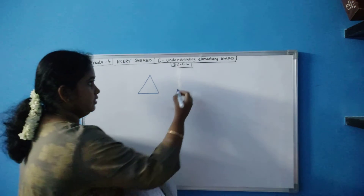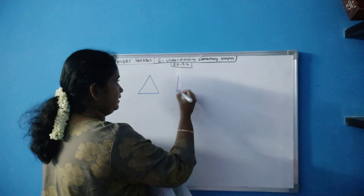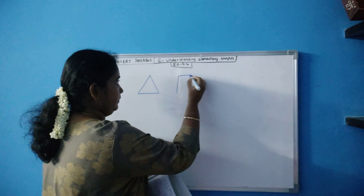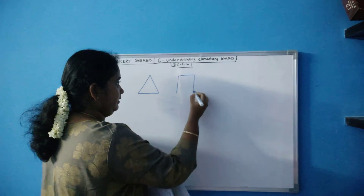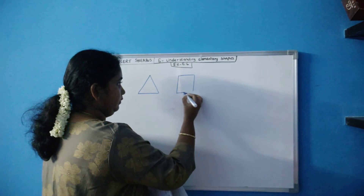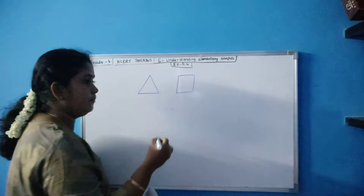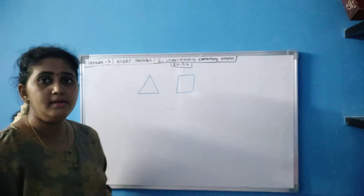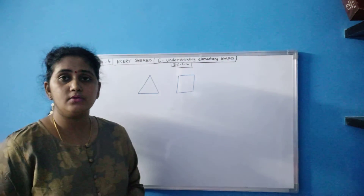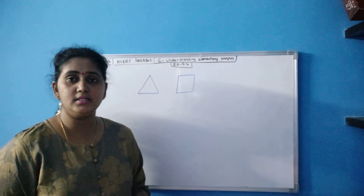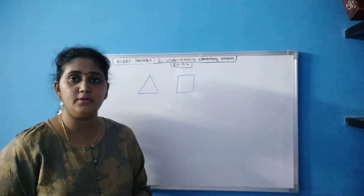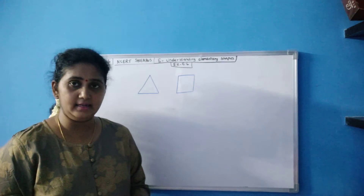With four matchsticks, are you able to make a triangle? No — with four matchsticks I am able to make only a square or parallelogram. So with four matchsticks it is not possible to make a triangle.